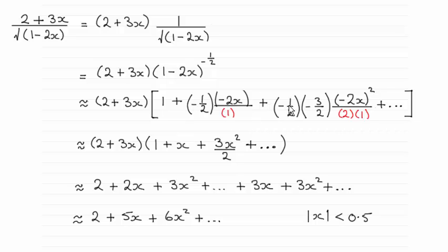And then it's plus the power n times n minus 1, so that's going to be minus 3 over 2. And then the x term minus 2x all squared all divided by 2 factorial. Then all I've done next is just clean these terms up giving me 1 plus x plus 3x squared over 2.